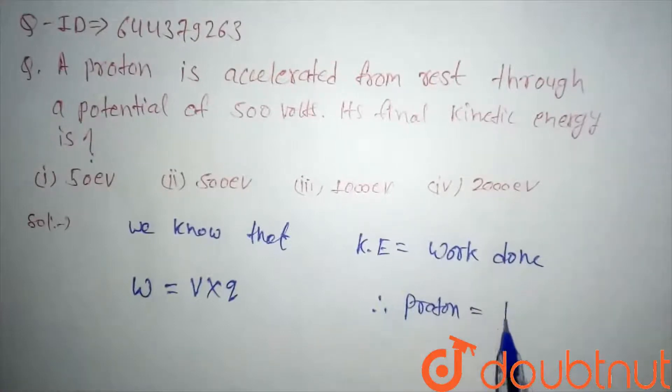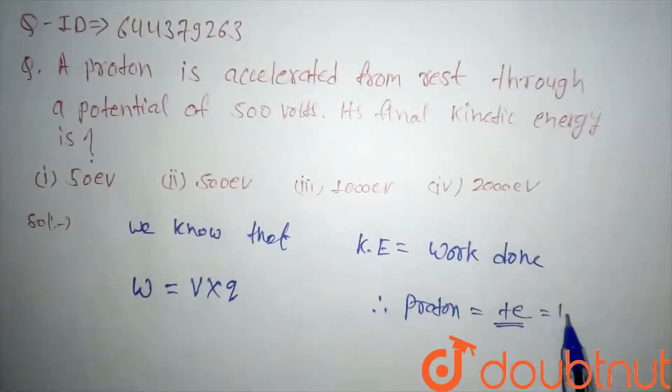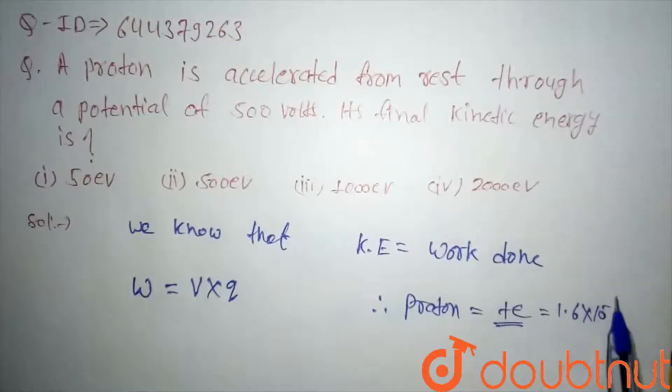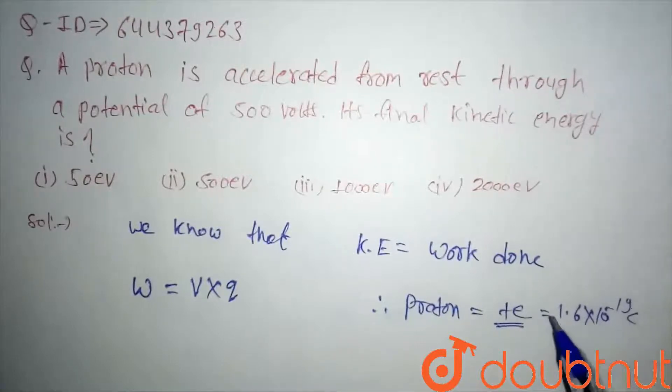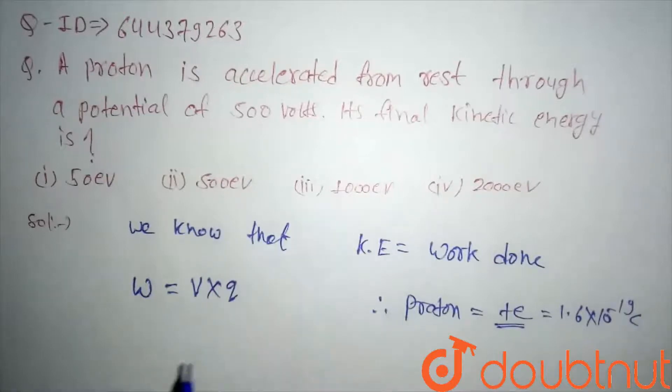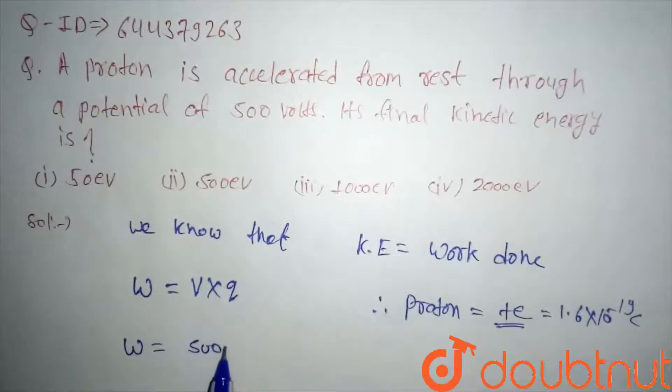charge is given by plus electron charge, which is equal to 1.6 × 10⁻¹⁹ coulombs. Also, we have voltage. So our work done will be voltage is 500 volts and we have the proton charge.